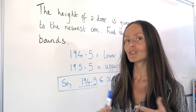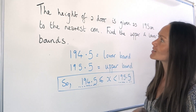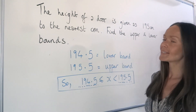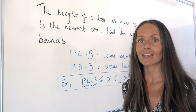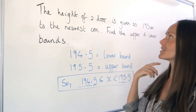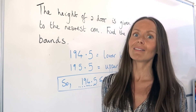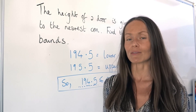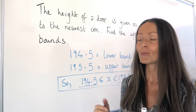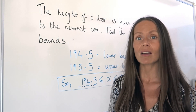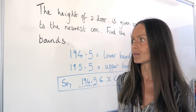In this video I'm going to show you how to work out upper and lower bounds. In the first example, the height of a door is given as 195 centimetres to the nearest centimetre. That means when the height of the door was measured, it wasn't necessarily exactly 195 — it could have been a little bit more or a little bit less. We're just rounding it to the nearest centimetre to make it simpler, so we have to work out the upper and lower bounds.